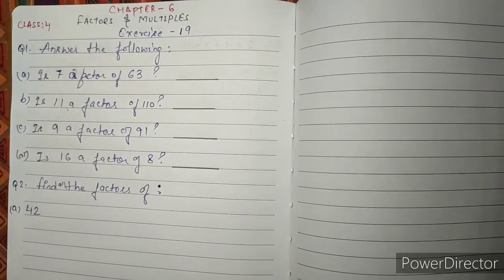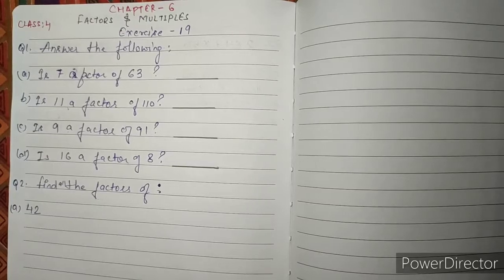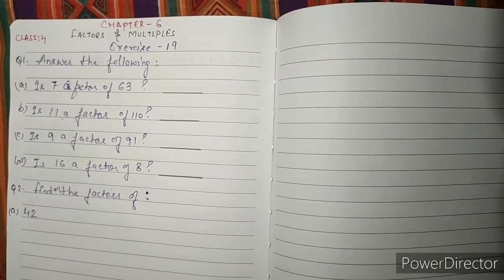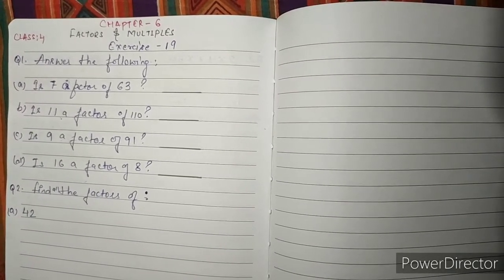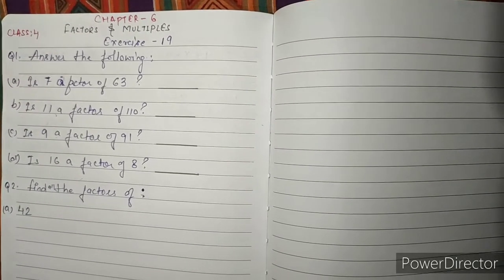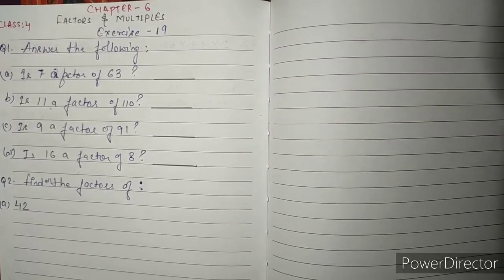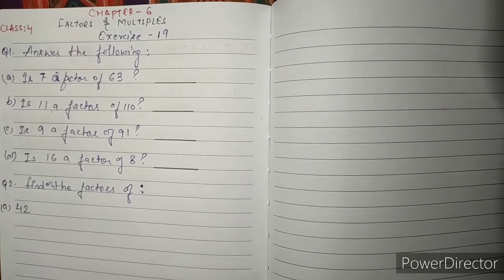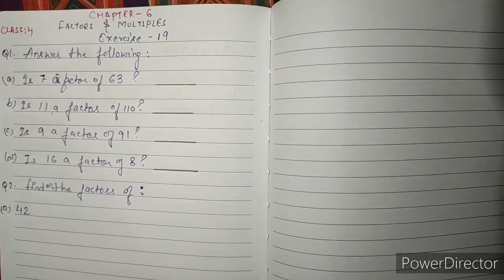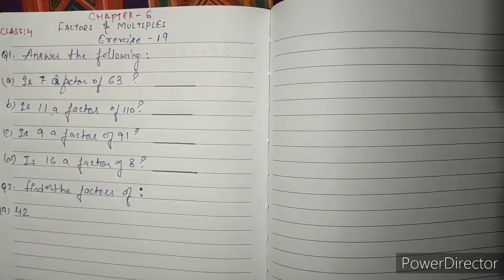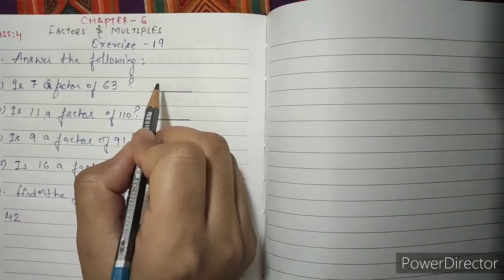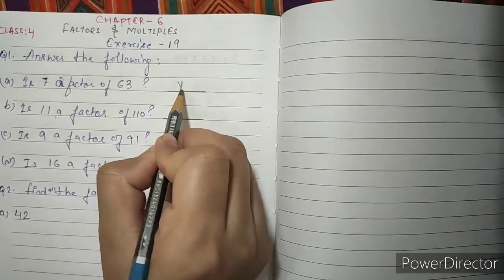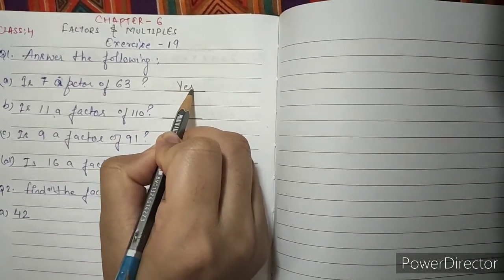A. Is 7 a factor of 63? In simple language, they are asking whether 63 is divisible by 7 or not. Yes, 63 is divisible by 7, so 7 is a factor of 63. We will write yes.